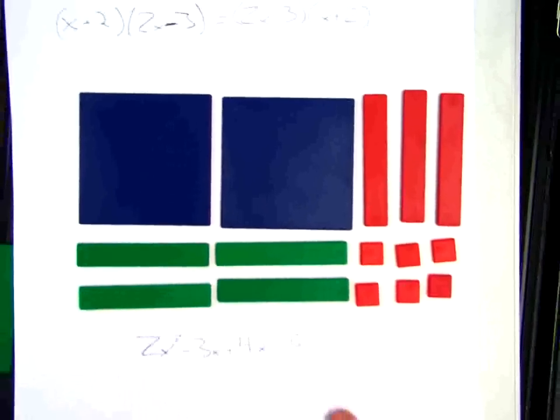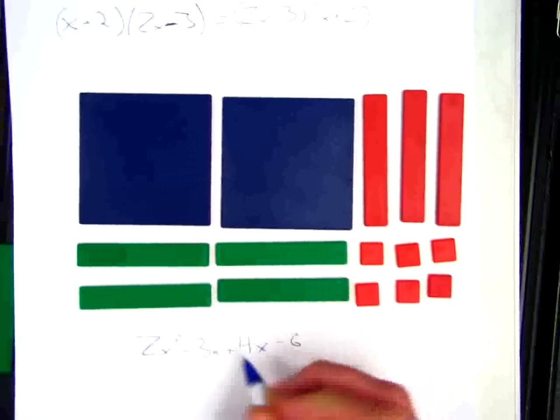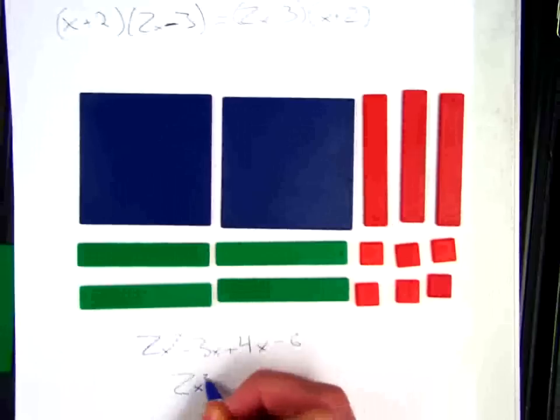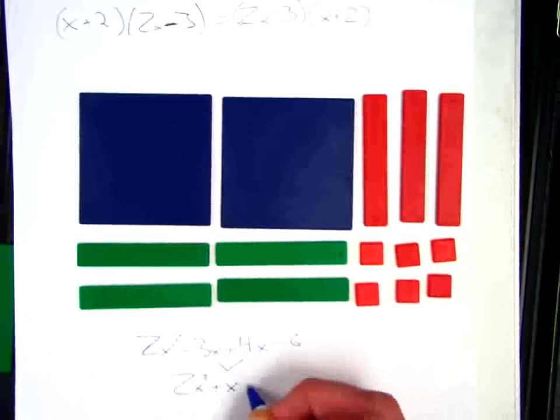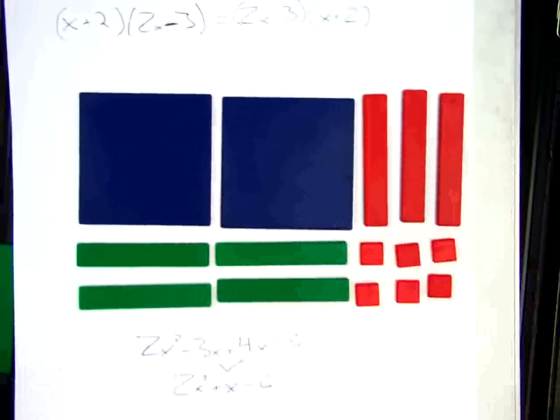If I were to simplify by combining like terms, that negative 3x and positive 4x, I can combine those and my final product would be 2x squared plus x minus 6. So that is how you multiply using algebra tiles.